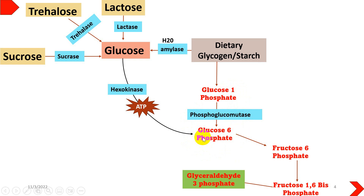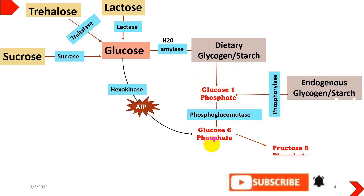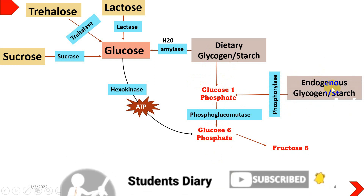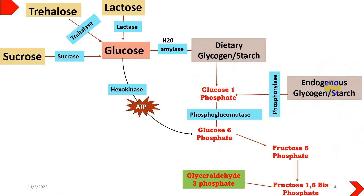Glucose-6-phosphate is a very common precursor molecule that can go to glycogenesis, gluconeogenesis, or glycolysis. That is the second feeder pathway entering into glycolysis. The third pathway comes from endogenous glycogen — the glycogen stored within the cell — where phosphorylase enzyme acts on it and converts it into glucose-1-phosphate.